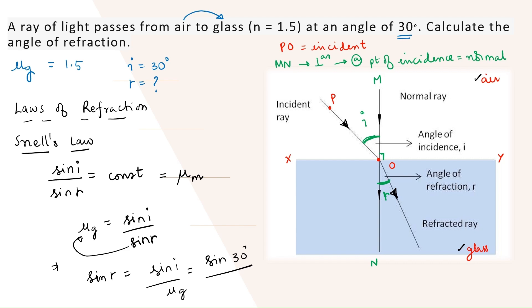I do not like to write numbers in decimal, so I will write 1.5 as a fraction: 1.5 can be written as 15 by 10, or 3 by 2. So sine r equals sine 30 divided by 3 by 2. Sine 30 is 1 by 2, divided by 3 by 2. This gives us 1 by 2 multiplied by 2 by 3, which equals 1 by 3. So sine r is equal to 1 by 3.